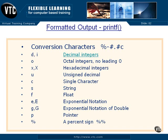A lowercase x will cause the letters of the hexadecimal value to be in lowercase; a capital X will cause them to come out uppercase. A U is used for an unsigned decimal. A C is for a single character. S is for string — we've already seen that. F is for float — we looked at that in the previous one.